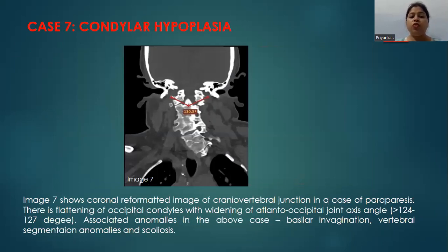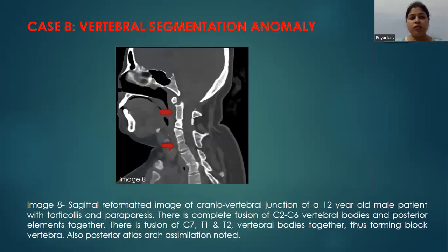This image shows coronal reformatted images of the craniovertebral junction in a case of paraparesis. There is flattening of the occipital condyle with widening of the atlantooccipital joint axis angle — in our case, 130.5 degrees. This is associated with other anomalies as well: basilar invagination, vertebral segmentation anomaly, and scoliosis.